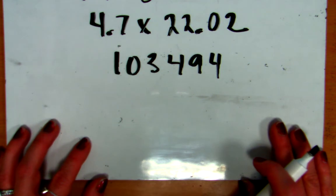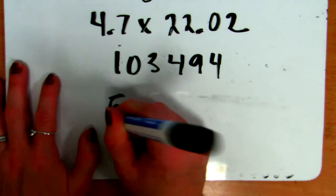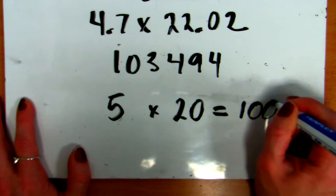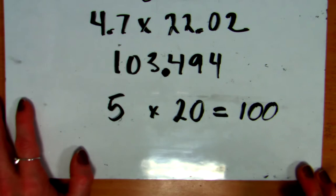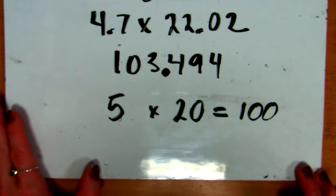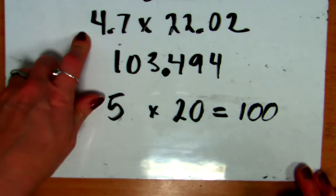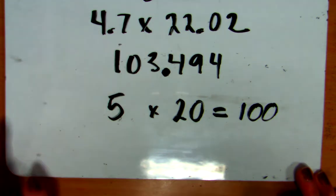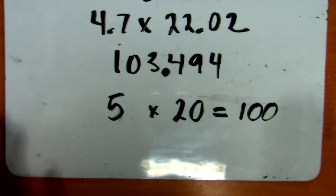First, you can estimate. Well, 4.7 is awfully close to 5. 22 is often close to 20. 5 times 20 is 100. So, I know my answer is going to be near 100. Where do I put my decimal point then? Right after the 3, giving me 103.494, which is very close to 100. So, that's option number 1. And often, the easiest option, especially when you're dealing with numbers that are larger than one whole. So, we've got 4.7 here and 22. Both of those are larger than one whole. So, estimation is often your best bet when you are dealing with numbers larger than one whole.